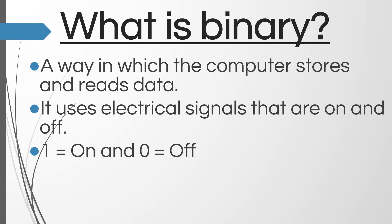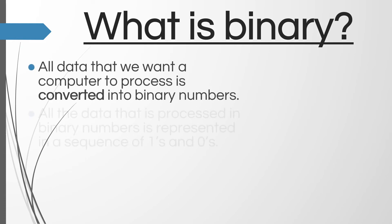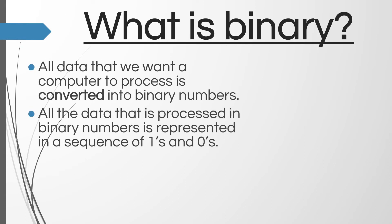For example, right now my computer is on, therefore I could say that the binary digit to represent my computer would be one, because it is turned on. If I was to turn it off, then it is in a state where it cannot turn on, it is off, therefore I would use the binary digit zero. So all data that we want a computer to process is converted into binary numbers.